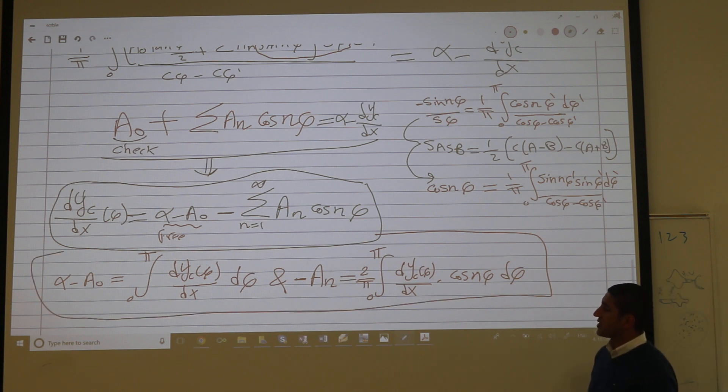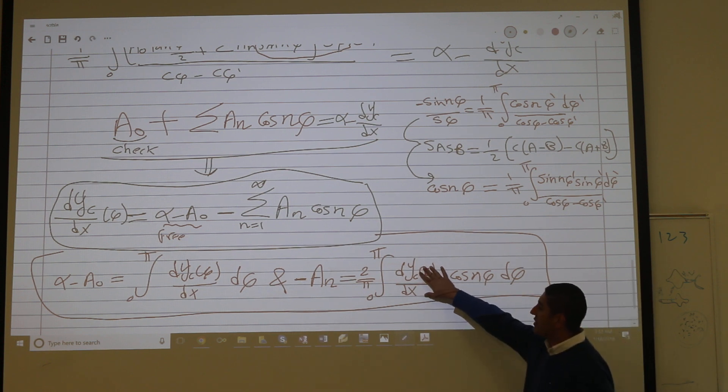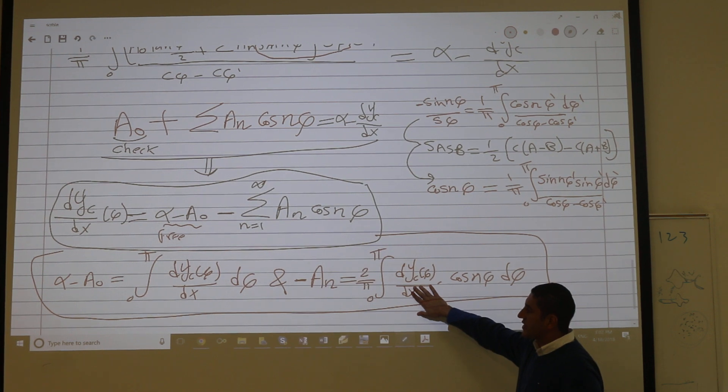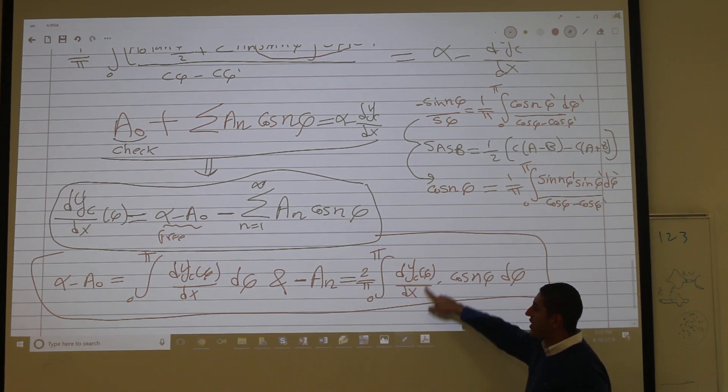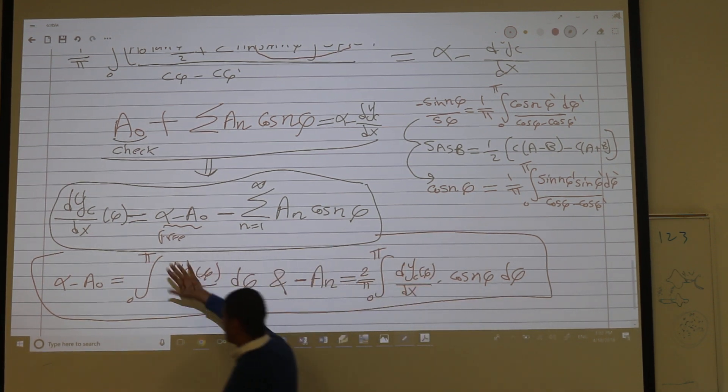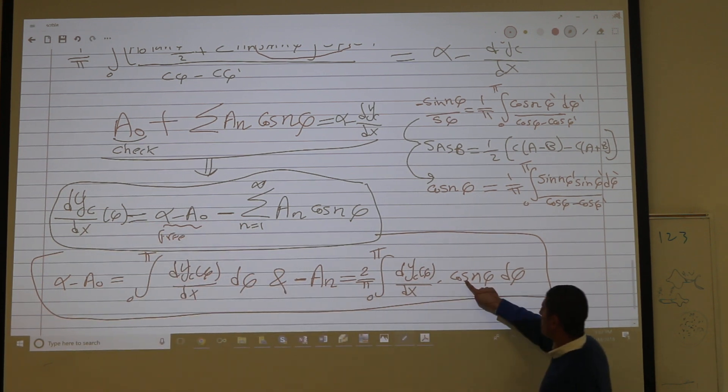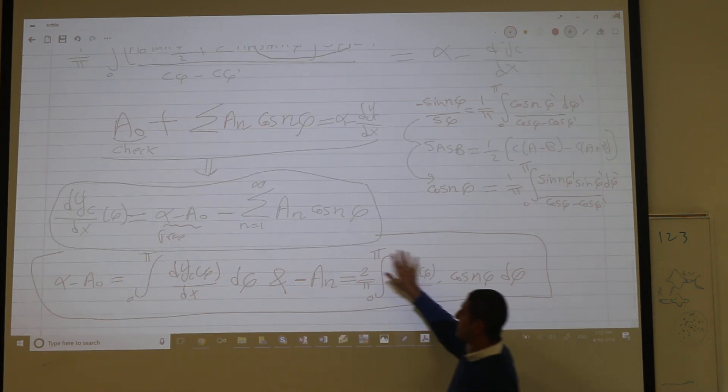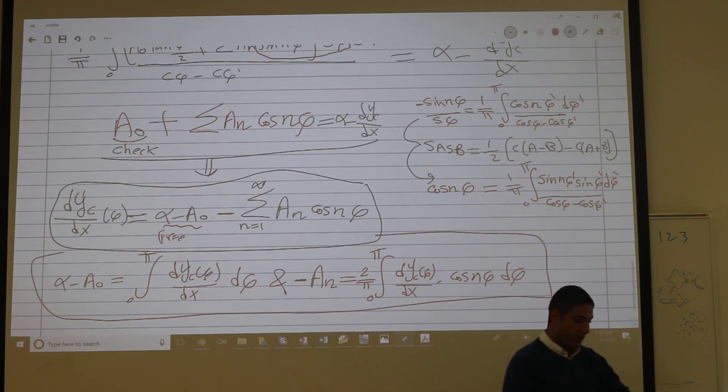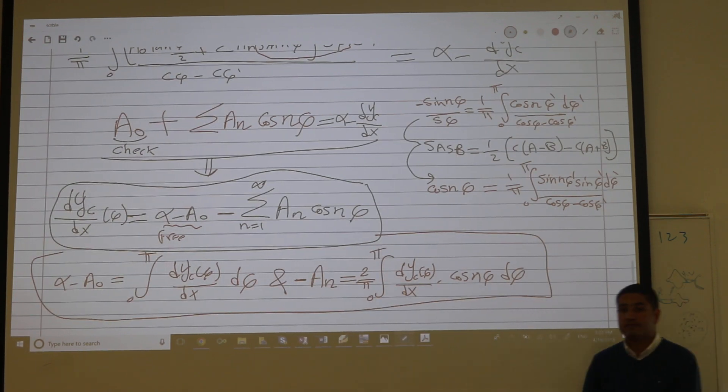We're done in the following sense. I'm given the shape of the camber, y. The free stream is u infinity, replace x in terms of phi, evaluate these integrals. This one gives you a nought immediately. Multiply by cosine n phi, integrate to get the a n coefficients. Hopefully they will terminate after a while.